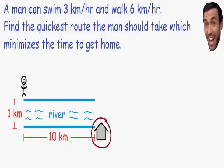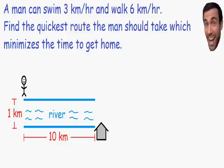The problem is that his house is on the other side of a river. So the question is: if the man can swim three kilometers per hour and he can walk six kilometers per hour, find the quickest route the man should take which minimizes the time to get home.